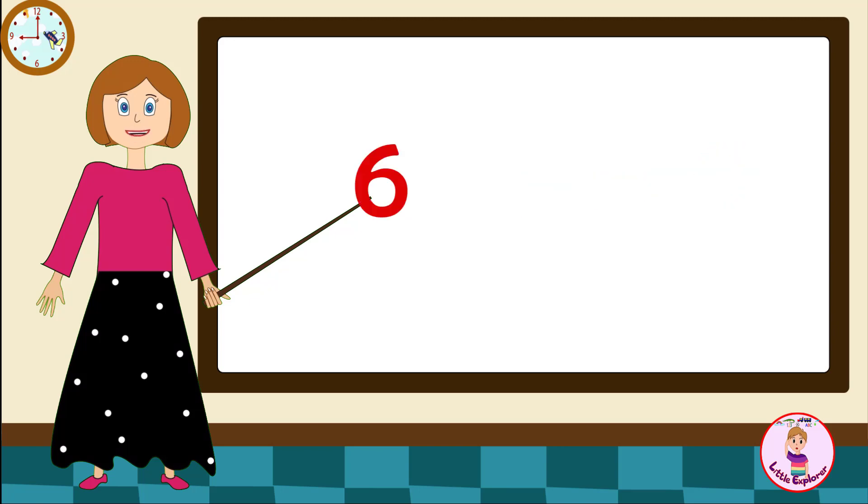Six sixes are thirty-six, six sevens are forty-two, six eights are forty-eight, six nines are fifty-four, six tens are sixty.